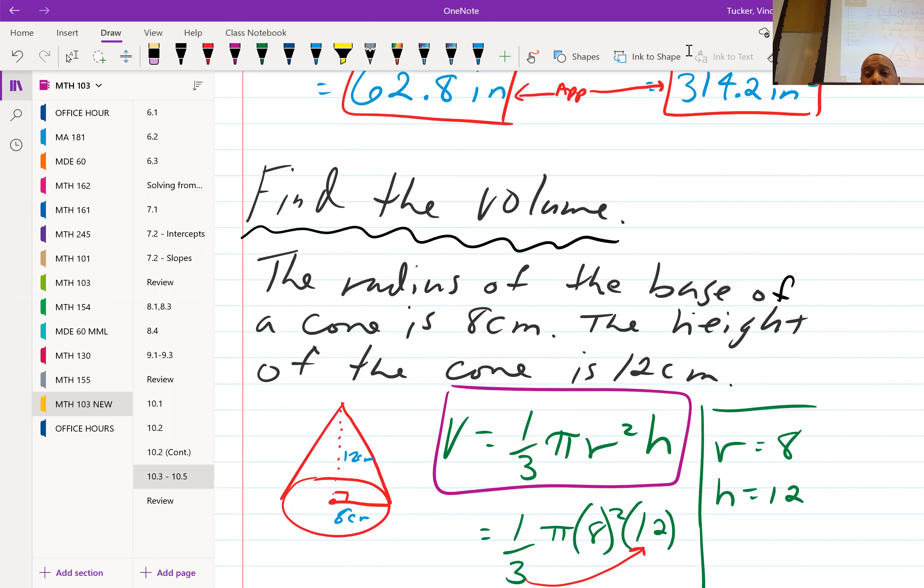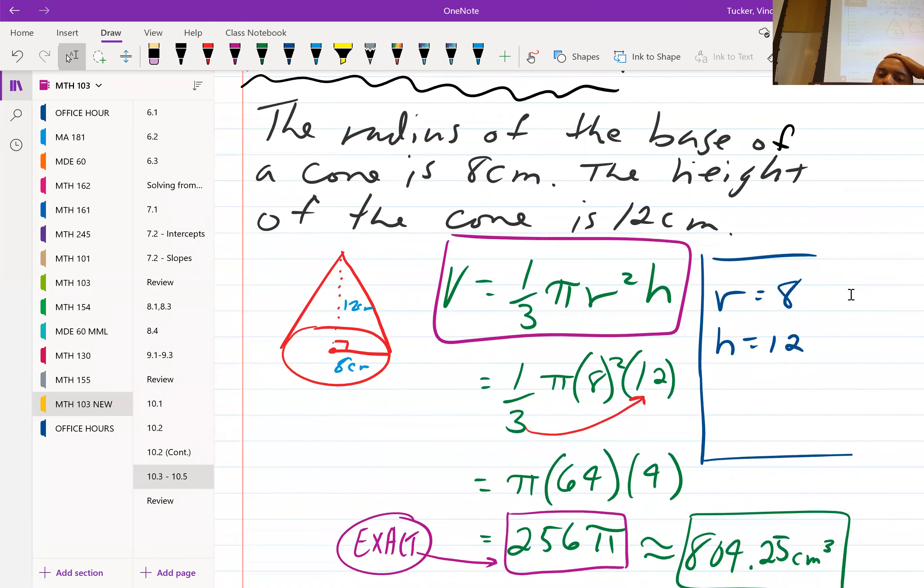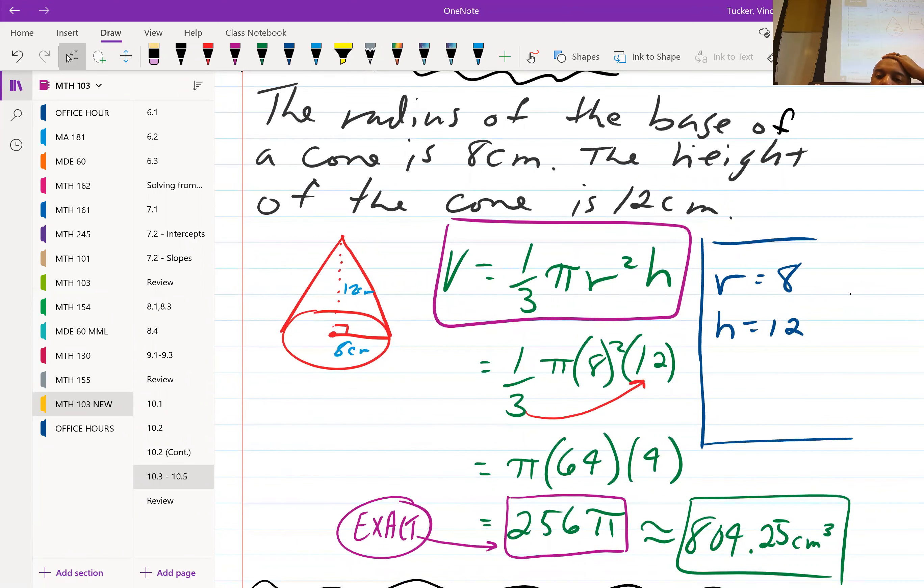You see the formula here one third pi r squared h is the formula for the volume of a cone. So plugging accordingly it's one third times pi times eight squared times 12. I took the one third into the 12 it left me with four, eight squared is 64. 64 times four is 256 so 256 pi is your exact answer then multiply 256 times the pi that'll give you 804.25 cubic centimeters.